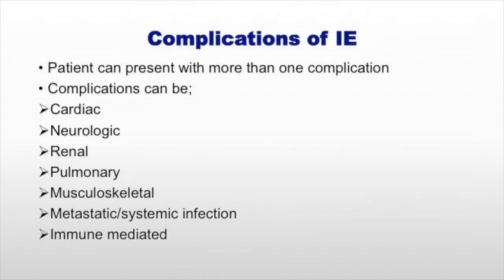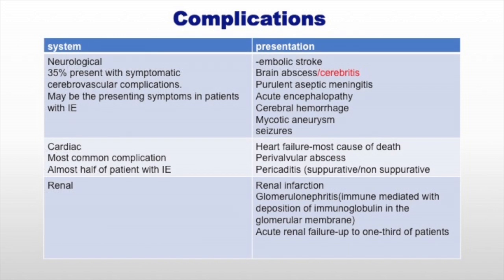Complications of infective endocarditis can be multisystemic. The patient can present with one or more complications involving cardiac, neurological, renal, pulmonary, musculoskeletal, metastatic, and immunomediated systems. This is a summary of the complications. In neurological complications, 35% of patients with symptomatic endocarditis can present with cerebrovascular complications. The presentation can involve stroke, brain abscess, or cerebritis.